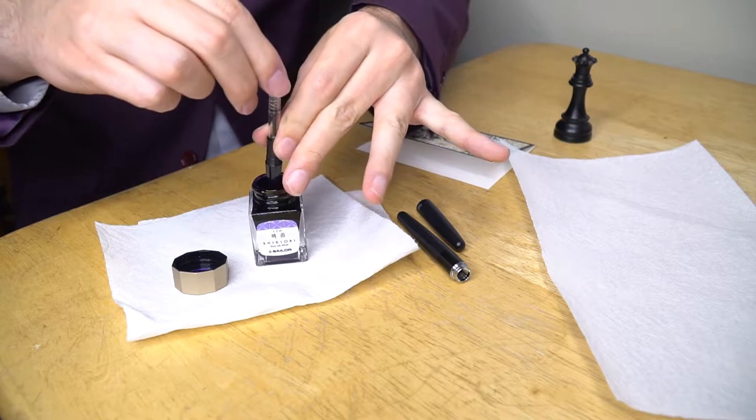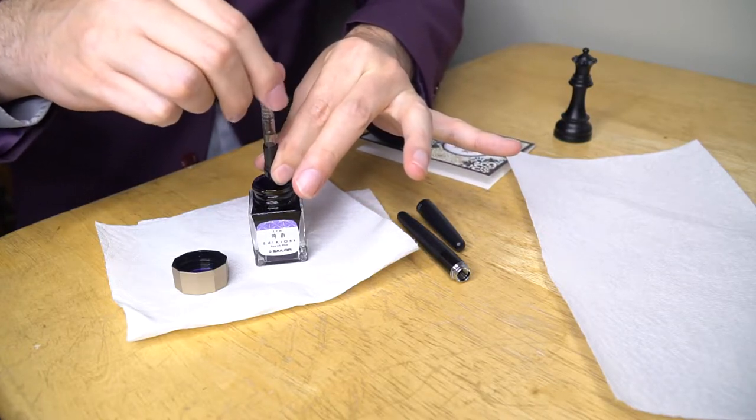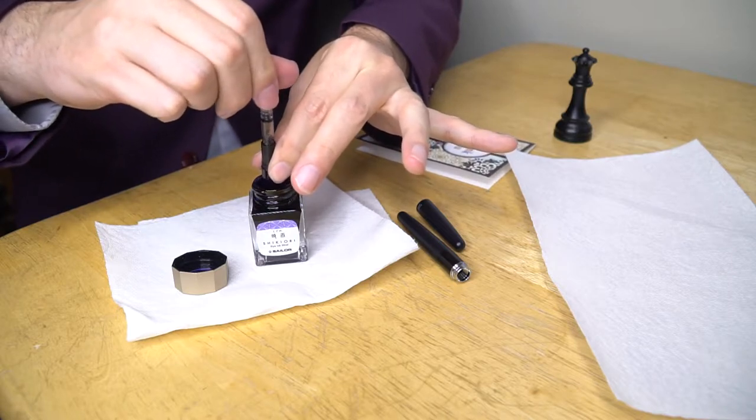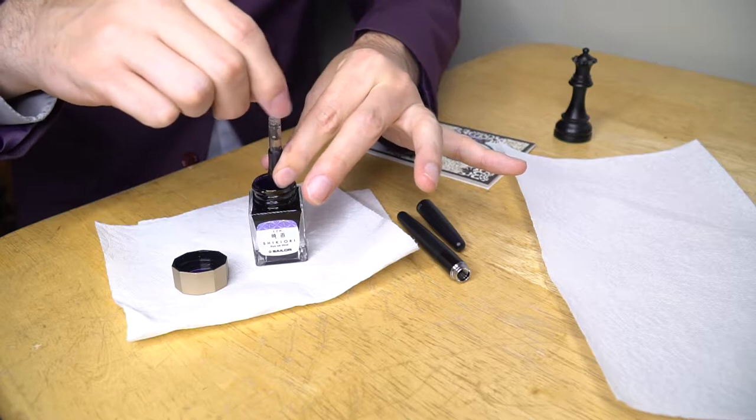We need to put the nib into the ink, like we did with the water, and use the piston converter in order to suck the ink into the reservoir. I got a few bubbles, so I reversed, had my tip in a little deeper, and did another pull of the ink.